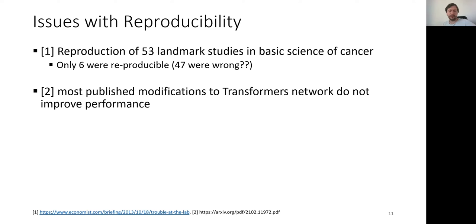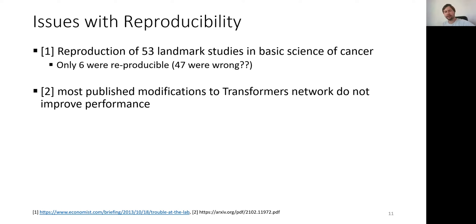This is also connected to machine learning. Every few years when some technology gets really popular — currently transformer networks — people publish a lot of papers on how to improve the architecture. A paper tested this for transformer networks and found that most published modifications do not actually improve performance. Even papers published in high-impact journals and conferences: when reproduced, the original claims could not be confirmed. So most published papers are actually wrong.